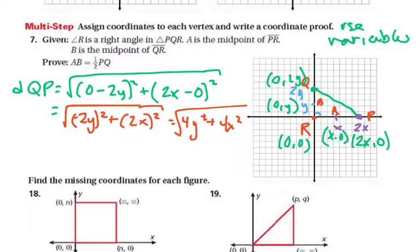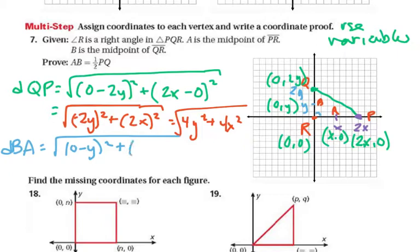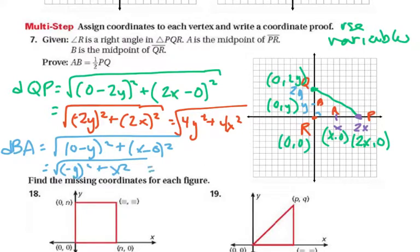Going back, the distance QP remains √(4Y² + 4X²). Now we need the distance of BA. The distance BA = √[(0 − Y)² + (X − 0)²] = √[(−Y)² + X²] = √(Y² + X²). So the distance BA is the square root of Y² + X².